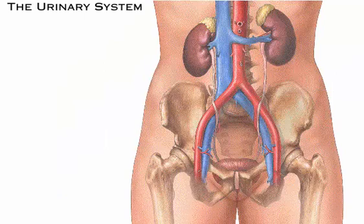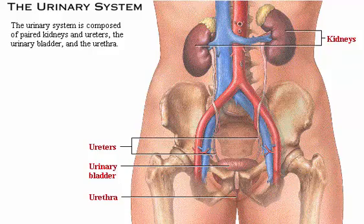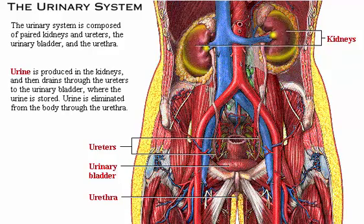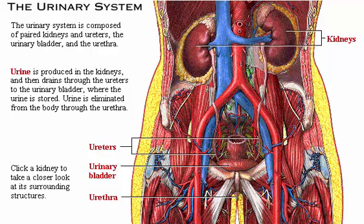The urinary system is composed of paired kidneys and ureters, the urinary bladder, and the urethra. Urine is produced in the kidneys and then drained through the ureters to the urinary bladder where the urine is stored. Urine is eliminated from the body through the urethra.